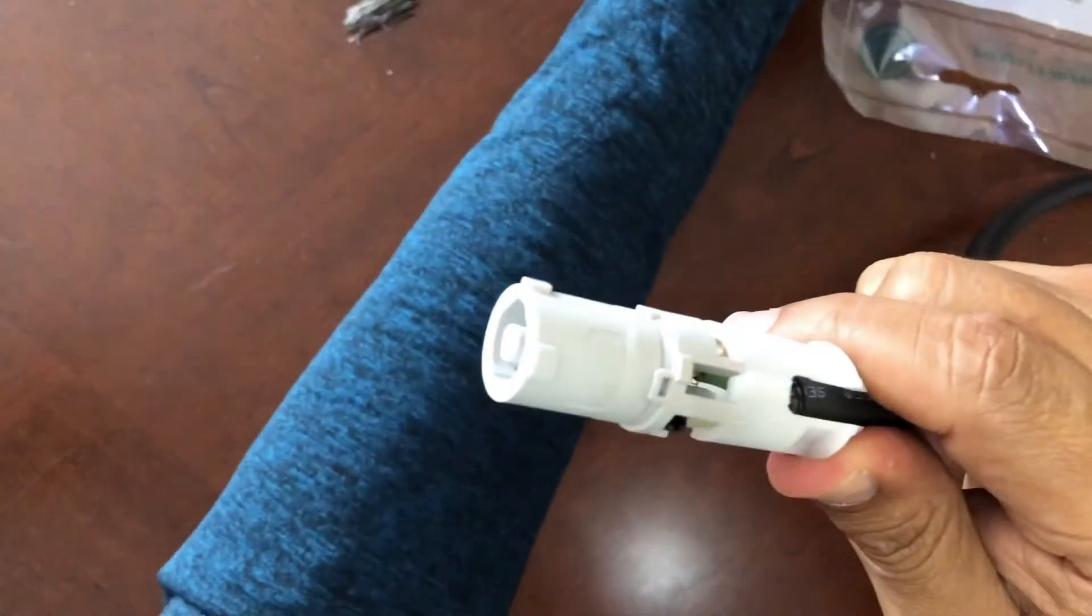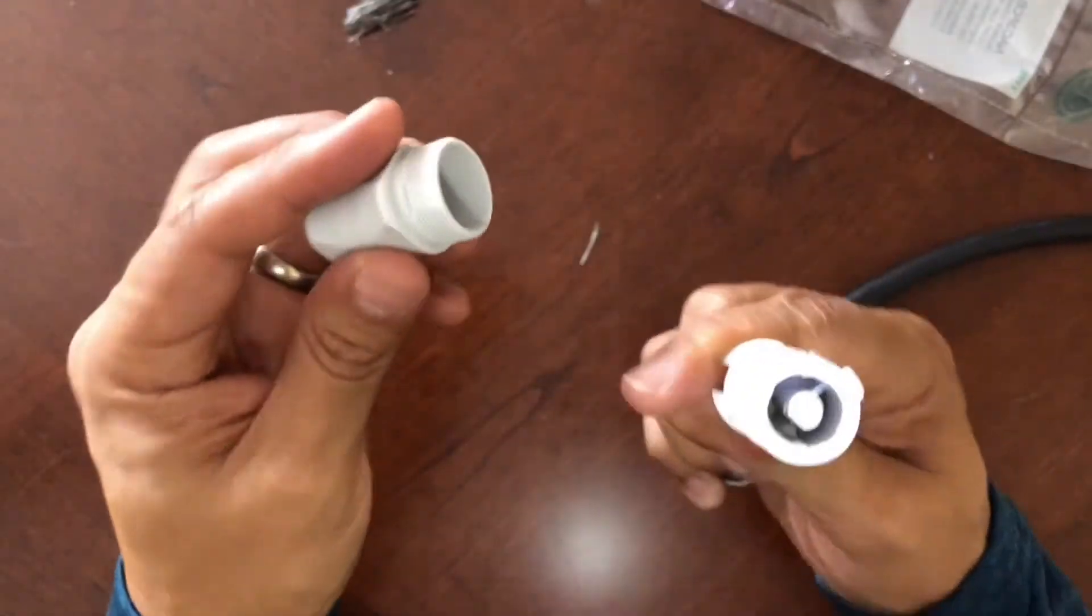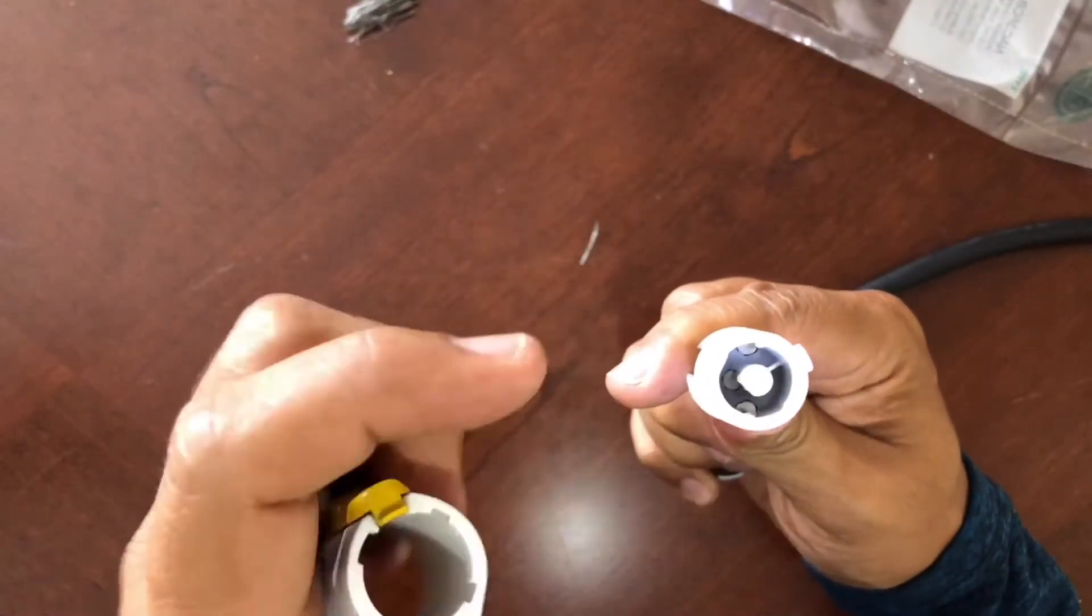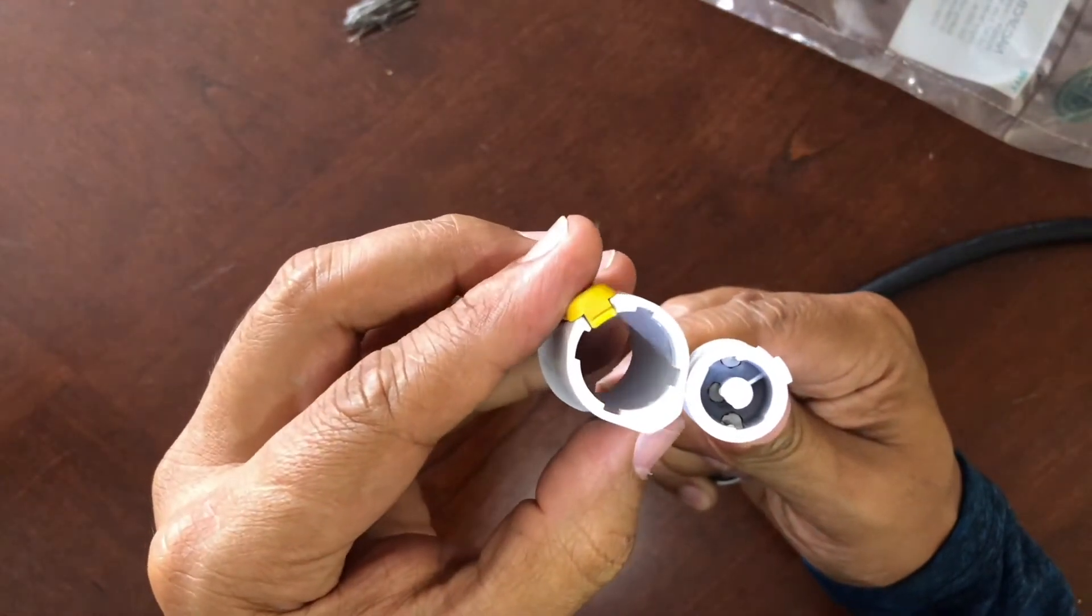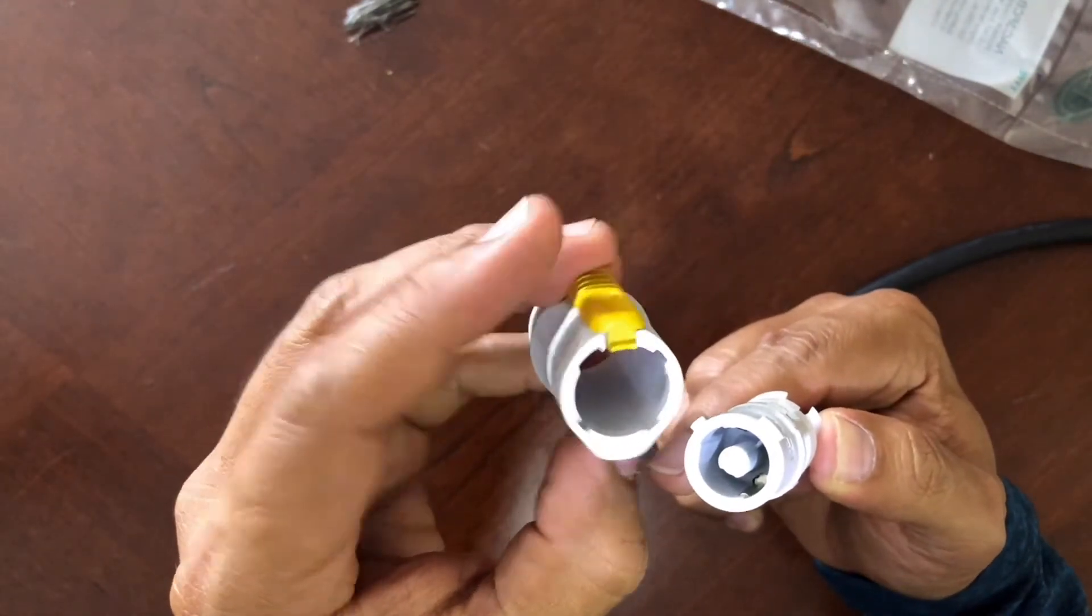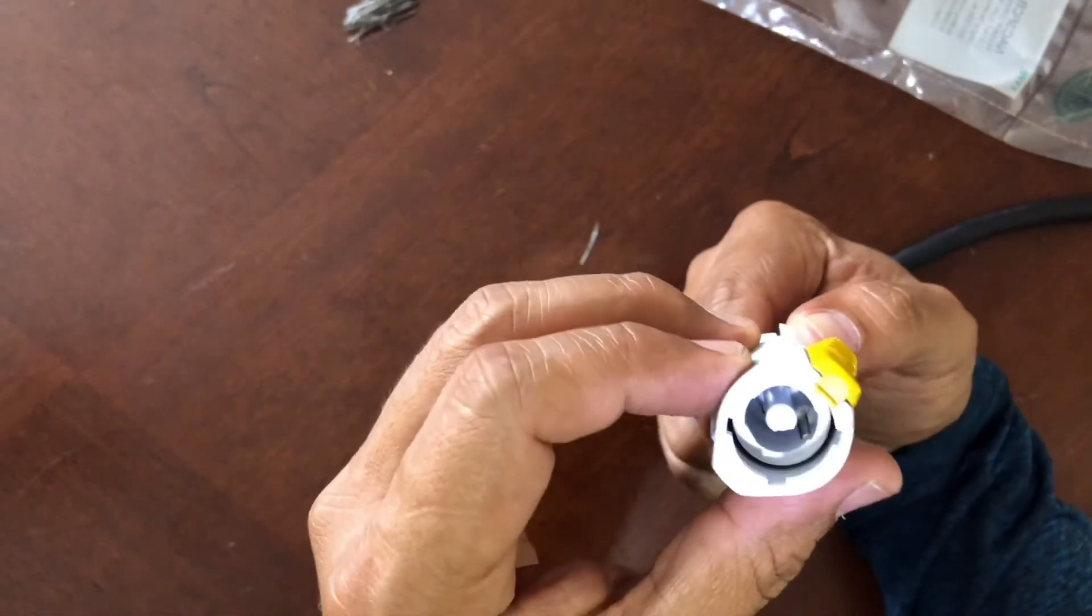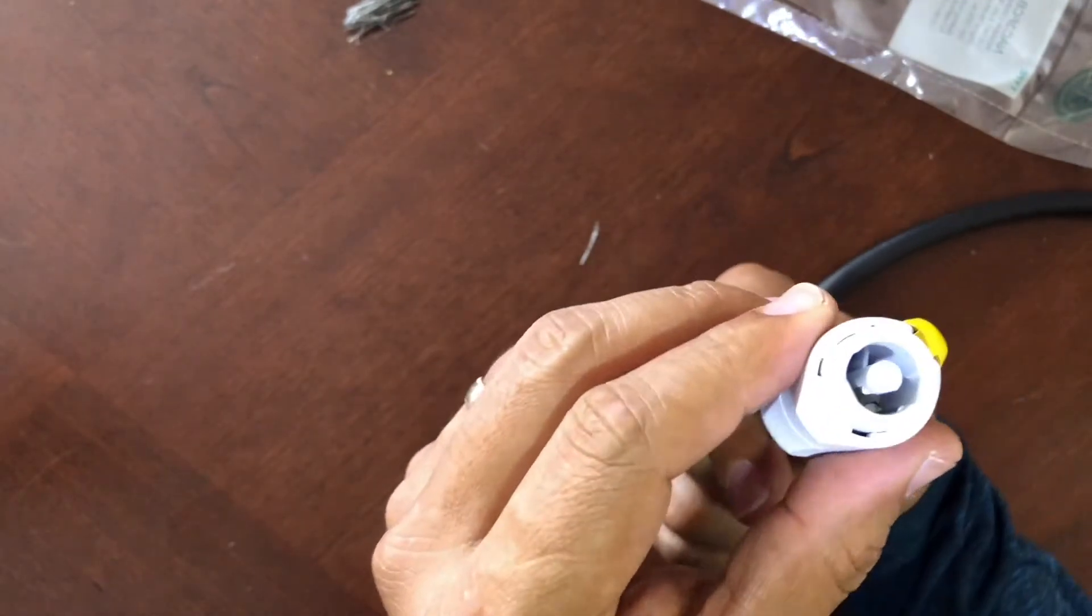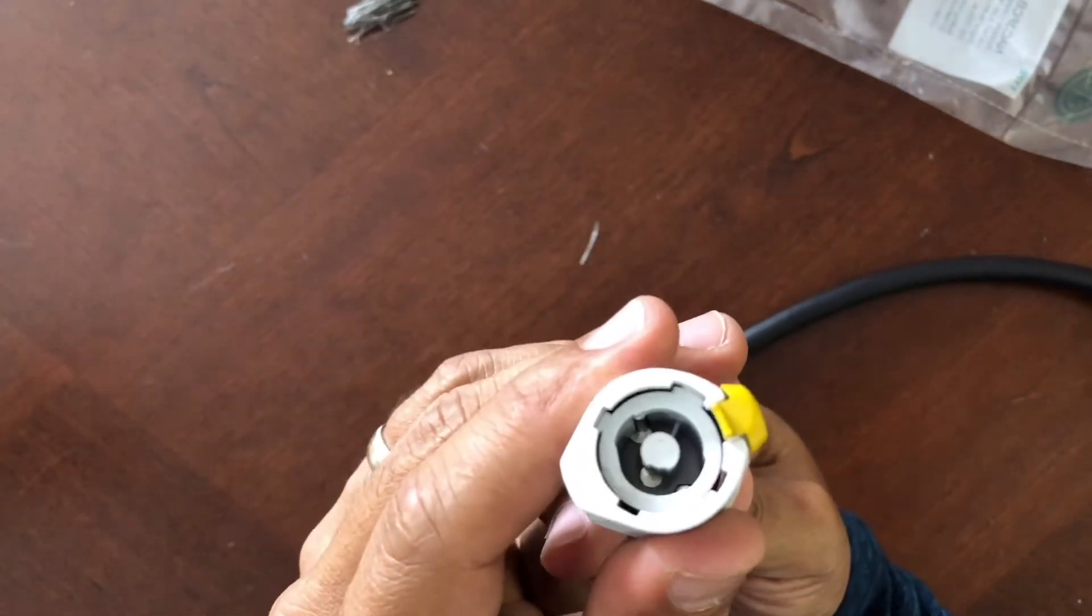Now you're ready to install the front cover of the connector. Again it has some tabs there. Align them together and insert the cover all the way down until you cannot push it any further.